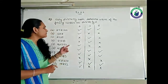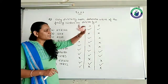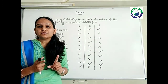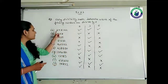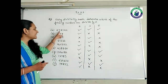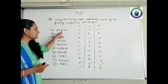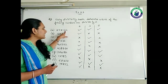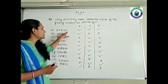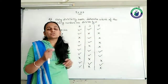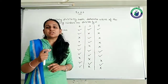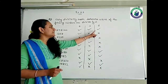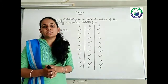Now, to check whether it is divisible by 3 or not, we need to add all the digits of the given number. So 2 plus 9 is 11, 11 plus 7 is 18, plus 1 is 19, 19 plus 4 is 23, 23 plus 4 is 27. The total is 27, which is divisible by 3. So if both are agreed, then you can say 6 is also right.